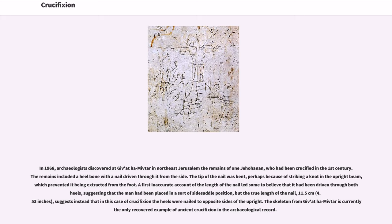In 1968, archaeologists discovered at Givat HaMivtar in northeast Jerusalem the remains of one Yehohanan, who had been crucified in the first century. The remains included a heel bone with a nail driven through it from the side. The tip of the nail was bent, perhaps because of striking a knot in the upright beam, which prevented it from being extracted. The true length of the nail, 11.5 cm (4.53 inches), suggests that in this crucifixion the heels were nailed to opposite sides of the upright. The skeleton from Givat HaMivtar is currently the only recovered example of ancient crucifixion in the archaeological record.